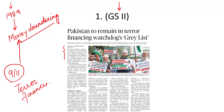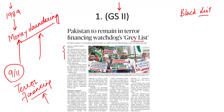The objective of FATF is that the world's financial system should not be misused for money laundering or terror financing. To enforce this, FATF creates two lists: a grey list and a black list. Countries like Iran and North Korea, which are not cooperating with FATF on money laundering or terror financing, are placed on the black list. Countries that cooperate but not sufficiently are placed on the grey list.